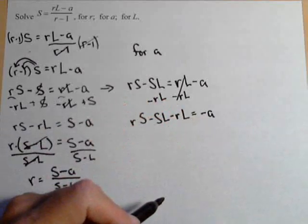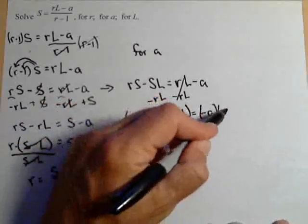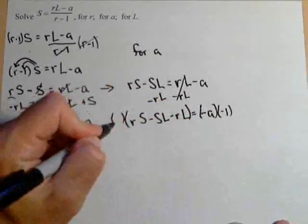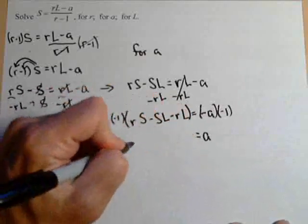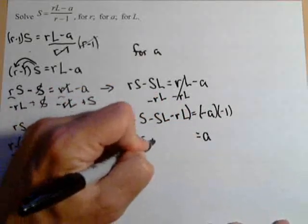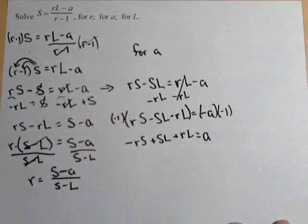We've almost got it. We just want that to be positive. So we're going to multiply both sides by a negative one. And we're going to get A equals negative RS plus SL plus RL. And we've got this solved for A.